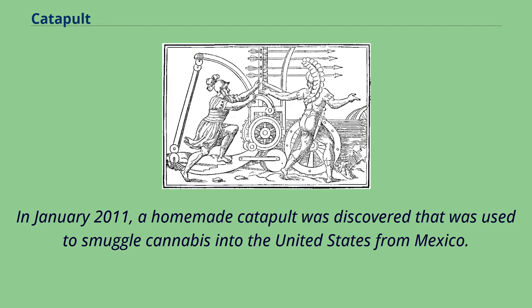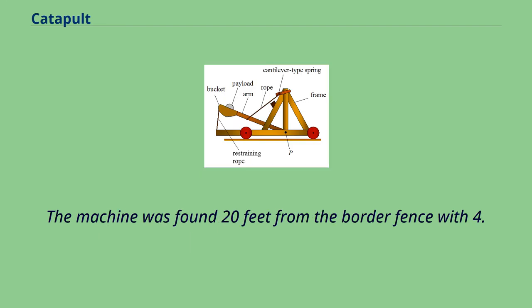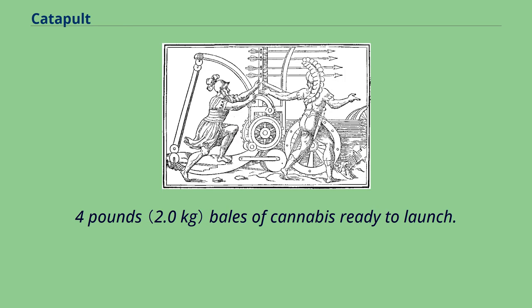In January 2011, a homemade catapult was discovered that was used to smuggle cannabis into the United States from Mexico. The machine was found 20 feet from the border fence with four four-pound bales of cannabis ready to launch.